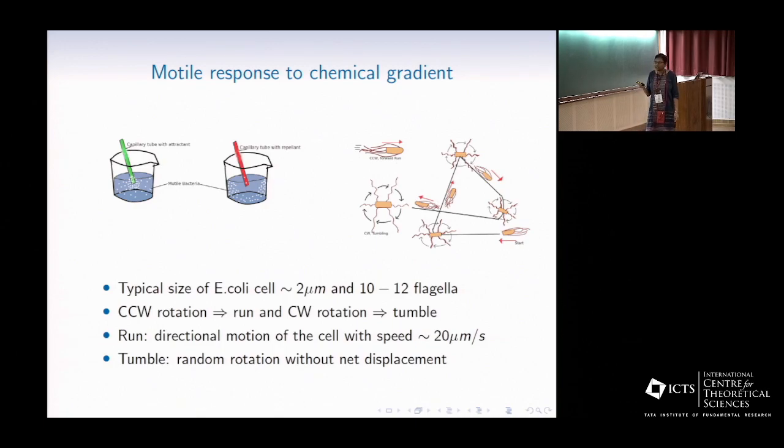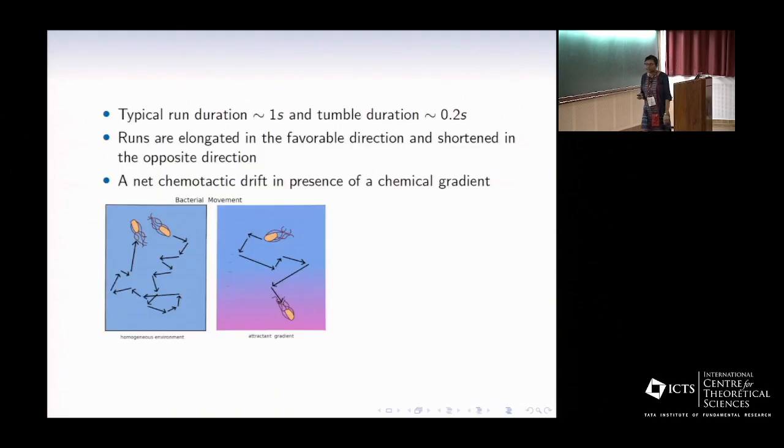For a single cell, it happens via run and tumble motions, as shown here. When the cell is placed in a homogeneous chemical environment, then after a large number of run and tumble, the net displacement is very close to zero. But when there is a gradient present, then all the runs in the favorable direction are extended, and in the opposite direction they are shortened, and the cell develops a net chemotactic drift.